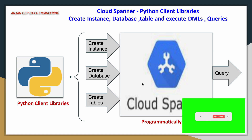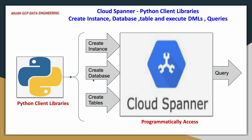In the demo, using Python client libraries we will create an instance in the first step, and then we will create a Cloud Spanner database using Google Cloud Standard SQL dialect. We will also try to create a simple table and then query the table using Python client libraries. It is going to be a very simple demo, so let us quickly jump into the demo.